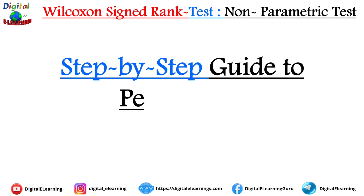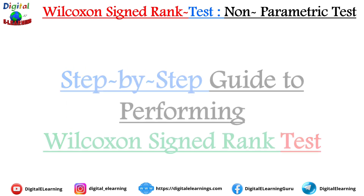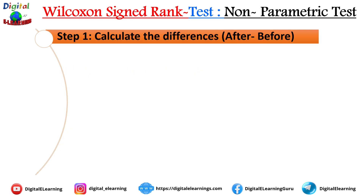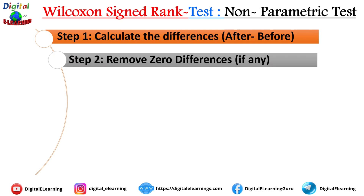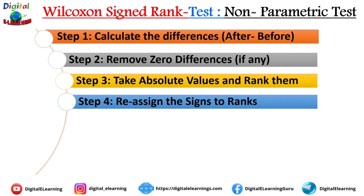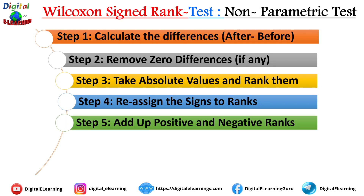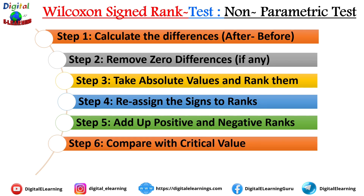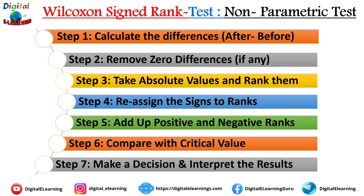Here is a step-by-step guide on how to perform Wilcoxon's signed rank test. Step 1: calculate the difference between before and after measurements. Step 2: if any difference is zero, remove that pair from the table. Step 3: take absolute values and rank them. Step 4: reassign the sign to the ranks. Step 5: add up all the positive and negative ranks. Step 6: compare these with the critical value. Step 7: make a decision based on the comparison and interpret the result.